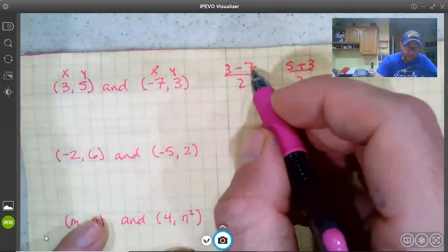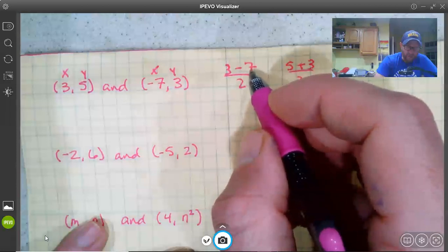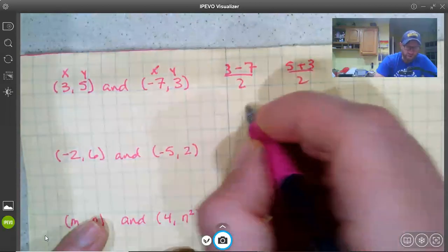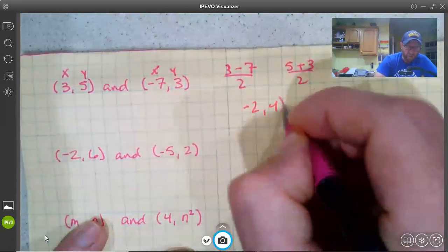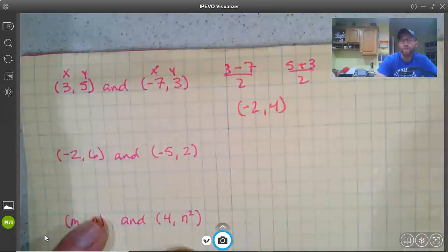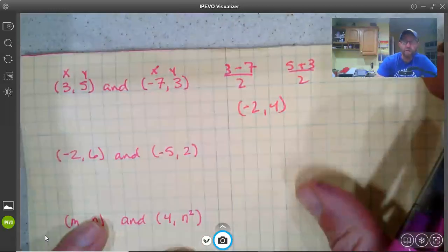So then we have 3 minus 7 is negative 4. Negative 4 divided by 2 is negative 2. 5 plus 3 is 8, divided by 2 is 4. So our midpoint is negative 2, 4. Negative 2, 4 is halfway between these two.